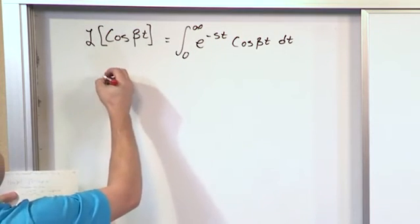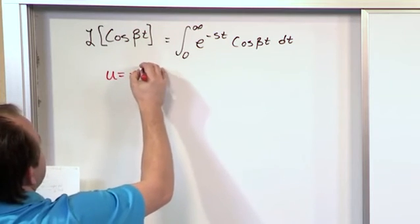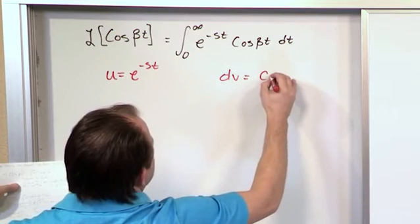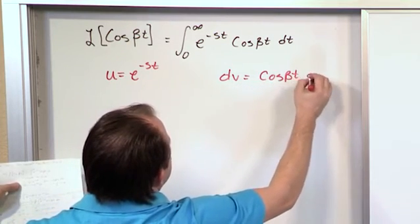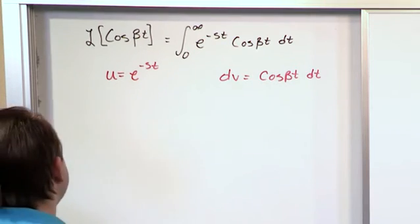So let's go ahead and set up our integration by parts. We'll say u equals the exponent, e to the minus st. dv we'll say is the rest of the integral: cosine beta t dt. And from this you need to derive other pieces of information that we'll plug in.